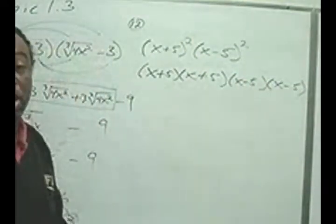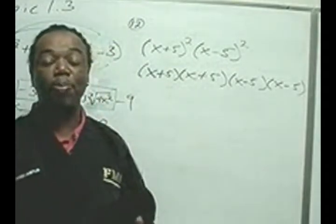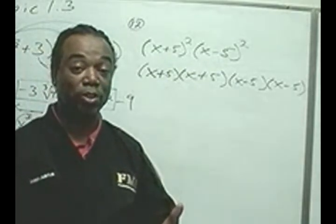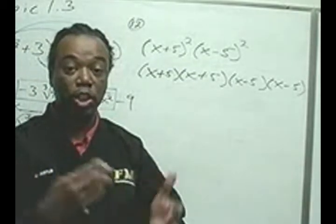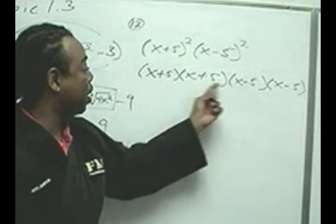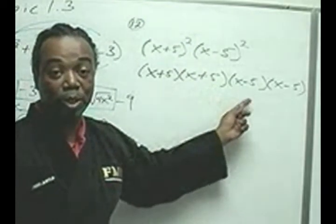and this becomes x minus 5 times x minus 5. The next property I'm going to use is the commutative property for multiplication. Commutative property for multiplication simply says that 5 times 4 gives the same answer as 4 times 5. So, you can change multiplication around. Here, I have x plus 5 times x minus 5. I'm going to switch that around to x minus 5 and x plus 5.